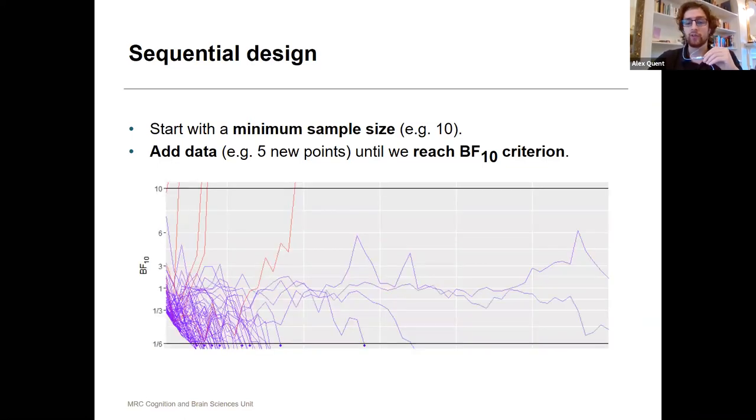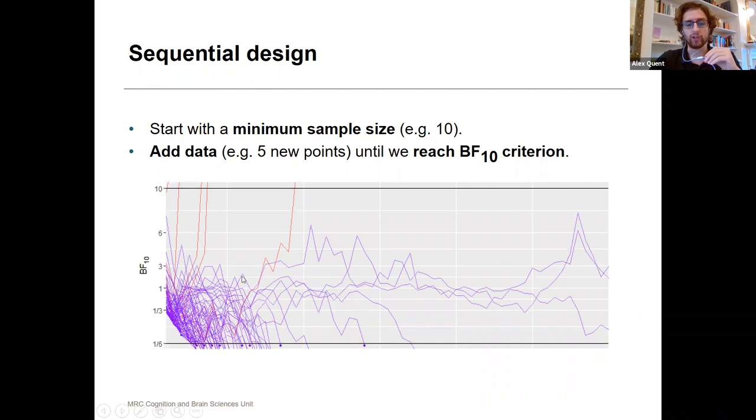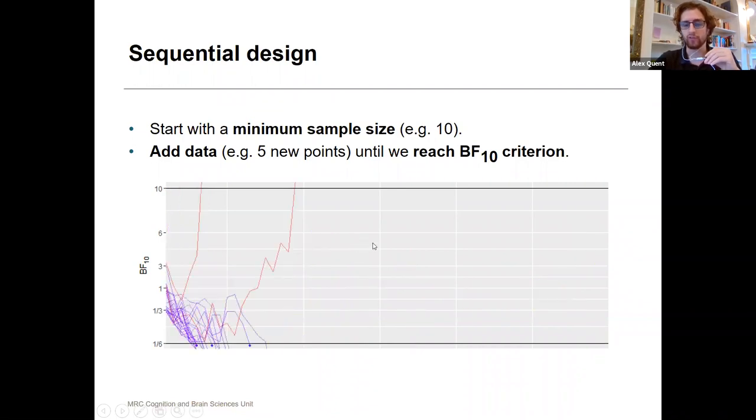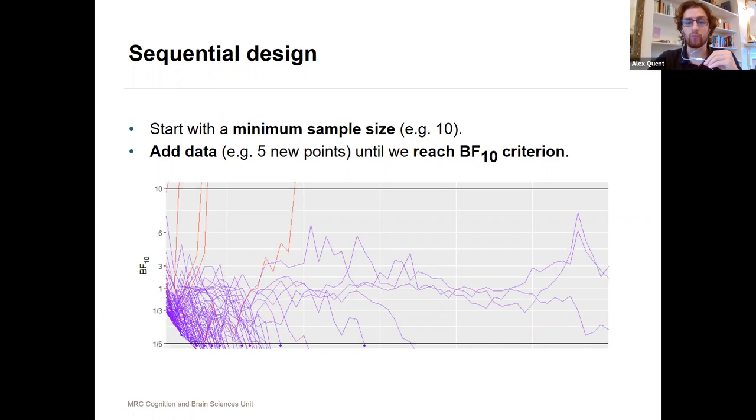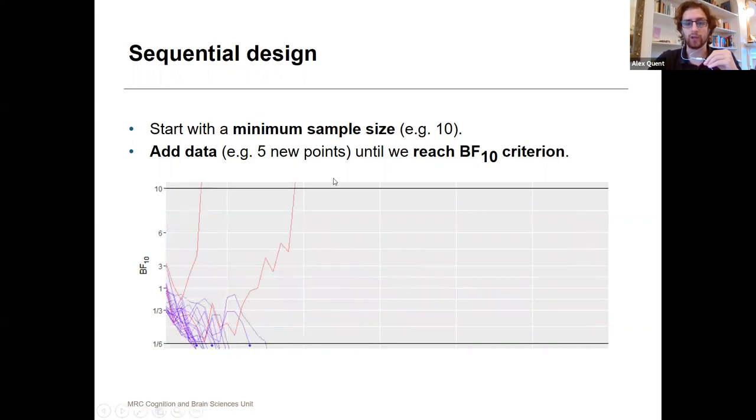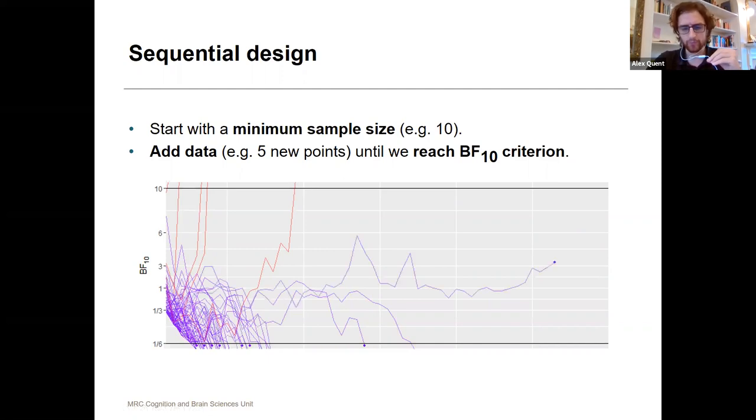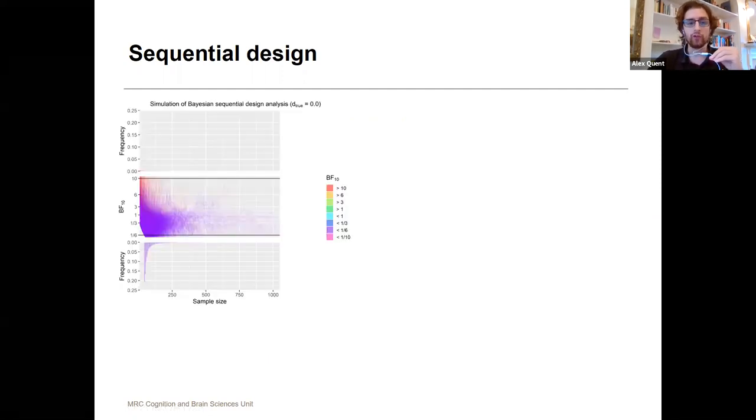If it's not, you add new data until you reach this criterion. That's illustrated in this simulation here, where each individual line is a simulated experiment in which the experimenter looks at the Bayes factor and only stops once they leave the plot at the top or bottom when they surpass the criterion. If you do this 10,000 times, you can nicely draw distributions like this.